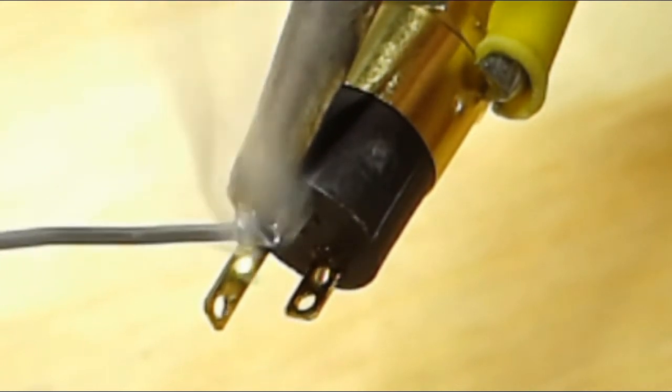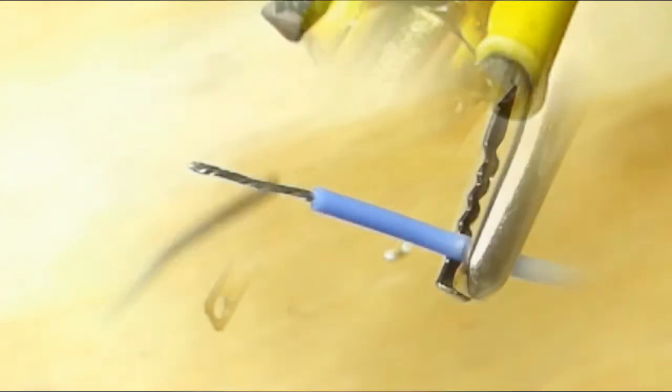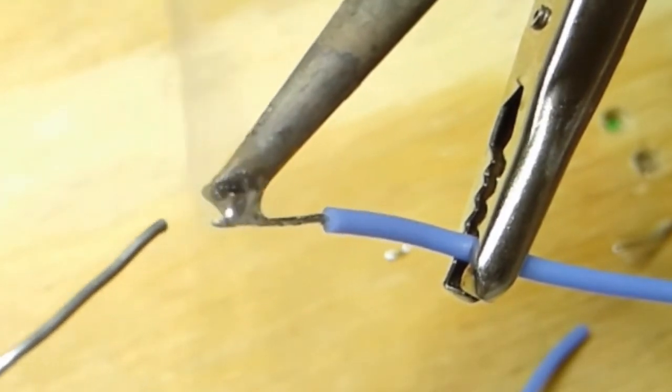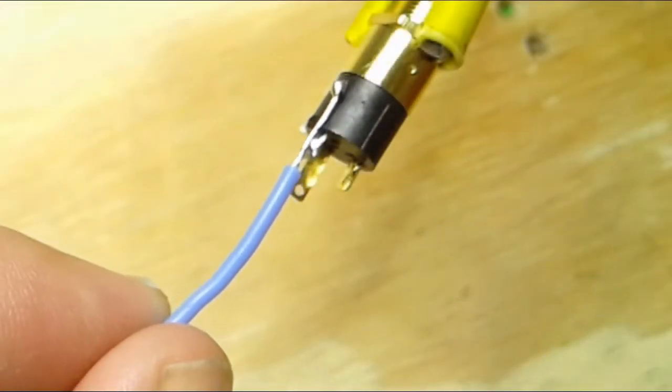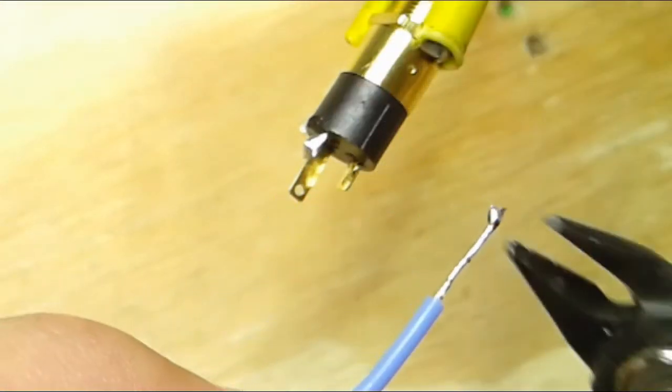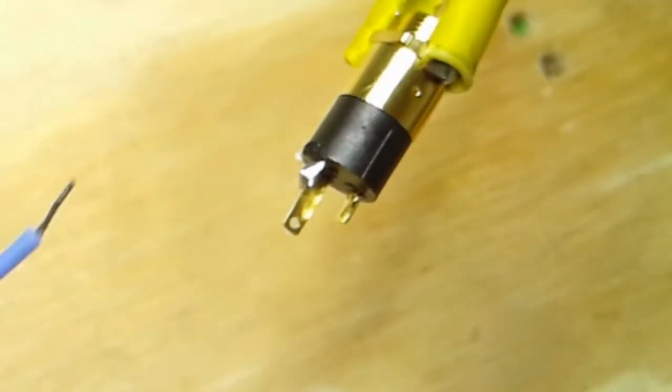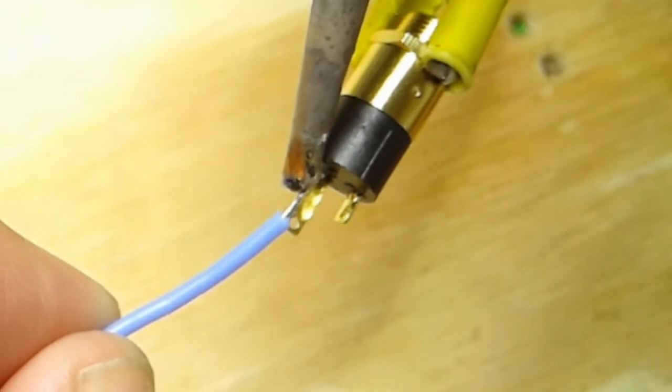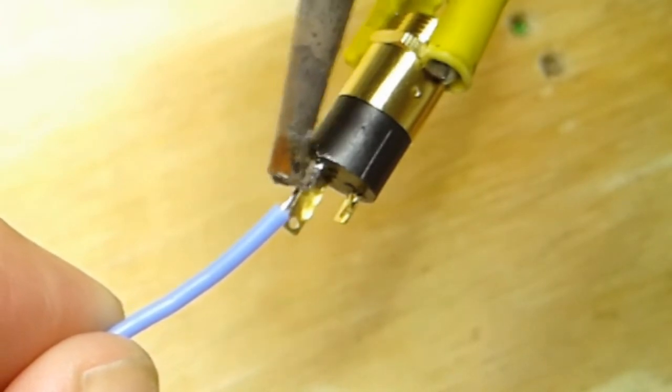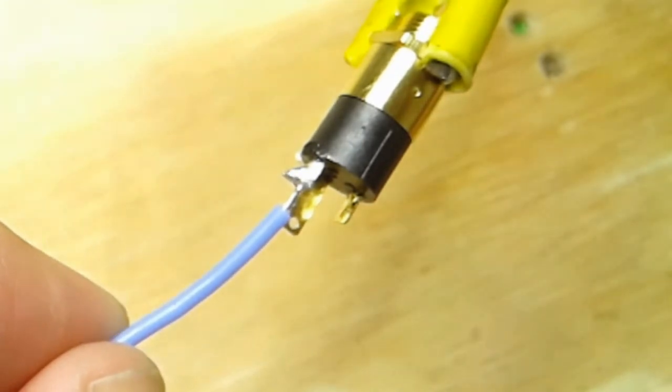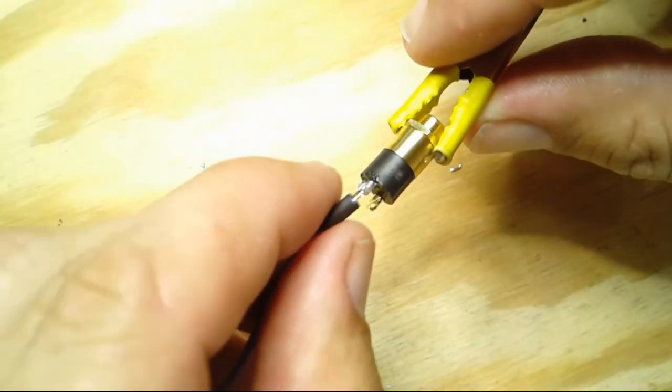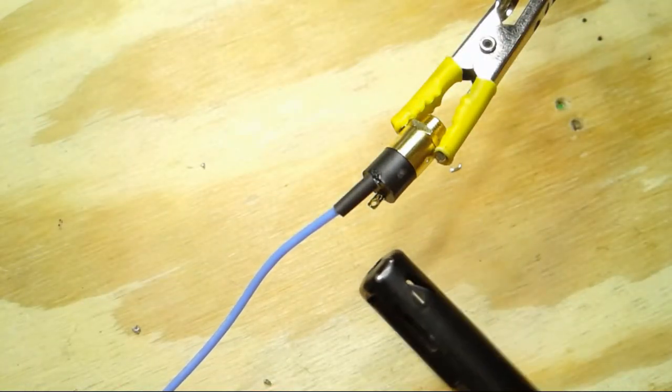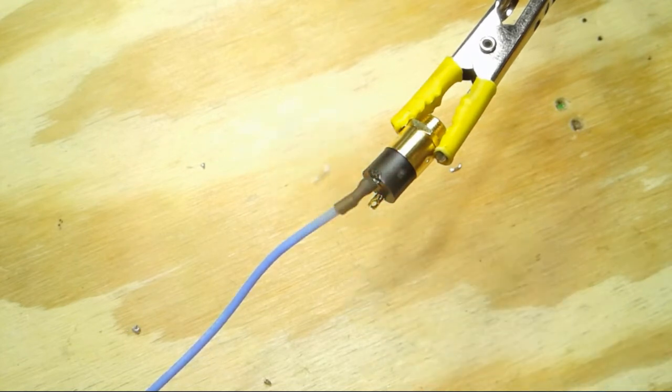So first, we'll put some solder on the terminal. Then we'll put solder directly on the wire. Now we're going to trim this wire to make it just a little bit shorter. We're going to hold the wire to the terminal, bring in the soldering iron, let it melt the solder, and then hold it there while it sets. We'll slide on our heat shrink, heat it up, and that wire is done.